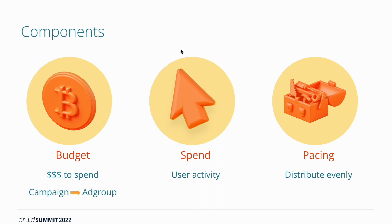There are three components of the ad serving system we want to talk about. The first is budget — the dollar value that the advertiser wants to spend on a campaign. Campaigns are a set of advertisements. The advertiser can choose to spend the campaign budget over its lifetime or set a daily cap. Spend is the cost associated with showing the ad to the user, driven by user activity. The pacing system tries to spend evenly through the course of the campaign, showing ads when user activity is highest, and not spending everything all at once at the beginning.